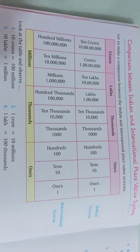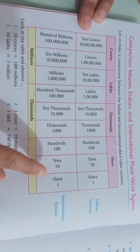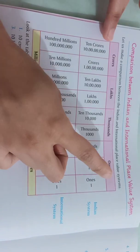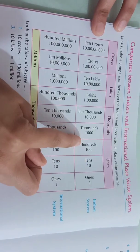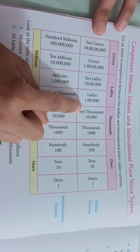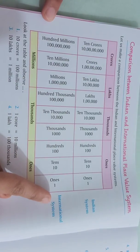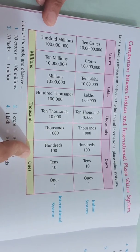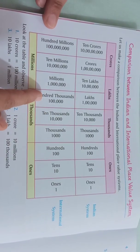Today we will do the next topic: comparison of the Indian and the international place value systems. As you can see in this table, in the Indian place value system there are four periods — ones, thousands, lakhs, and crores. In the ones period there are three places: ones, tens, hundreds. In thousands there are two places, and in lakhs and crores there are two places each. In the international system there are three periods: ones, thousands, and millions — each with three places.